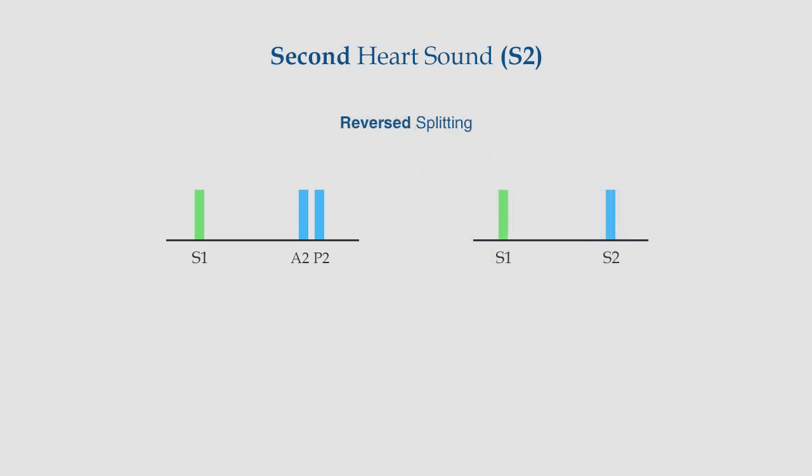Finally, the reverse splitting. In contrast to the physiological splitting, in reverse splitting, the two components of S2 come together on inspiration and separate on expiration. This occurs in conditions where left ventricular emptying is delayed, and thus the aortic valve closes after the pulmonary valve. Examples include left bundle branch block and left ventricular outflow obstruction.